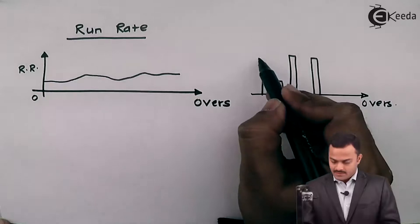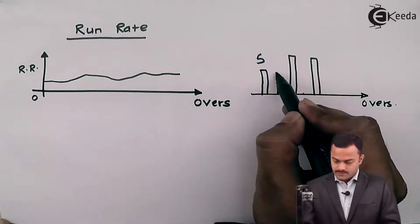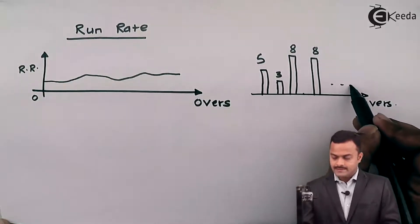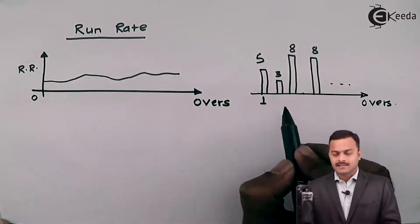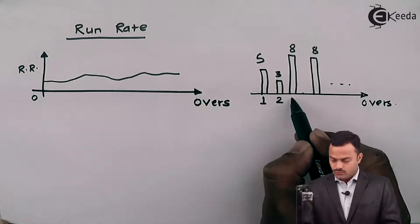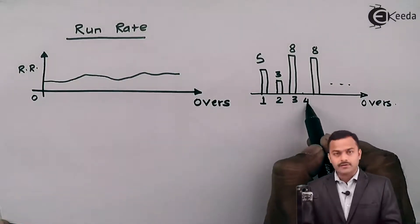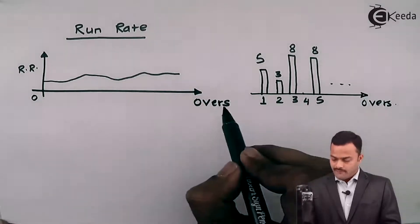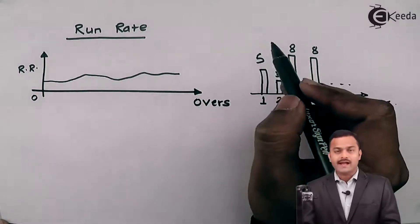So let's take an example: this is 5, this is 3, 8, 8, 8 like that, and let's take this over number 1, 2, 3, 4 is a maiden over, 5 like this. So here I'm having overs and on y-axis I'm having number of runs scored.